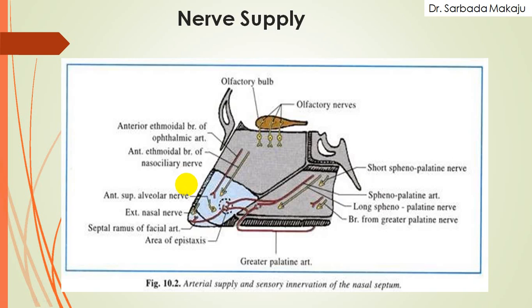Now the nerve supply of the nasal septum. It is supplied by the anterior ethmoidal nerve, the long sphenopalatine nerve, the short sphenopalatine nerve, a branch of the anterior superior alveolar nerve, and the external nasal nerve. These are the nerve supply of the nasal septum.